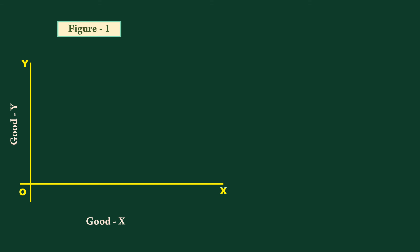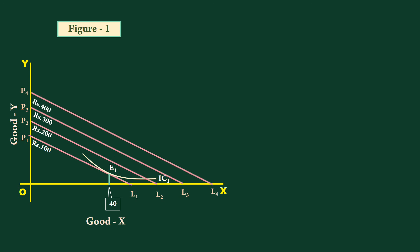Good x along the x axis is an inferior good. Given the prices of two goods and income, the consumer is in equilibrium at E1. The consumer's income is 100 rupees. 40 units of good x is purchased. Price remaining the same when the income increases to 200 rupees, 300 rupees and 400 rupees, the consumer is in equilibrium at E2, E3 and E4.